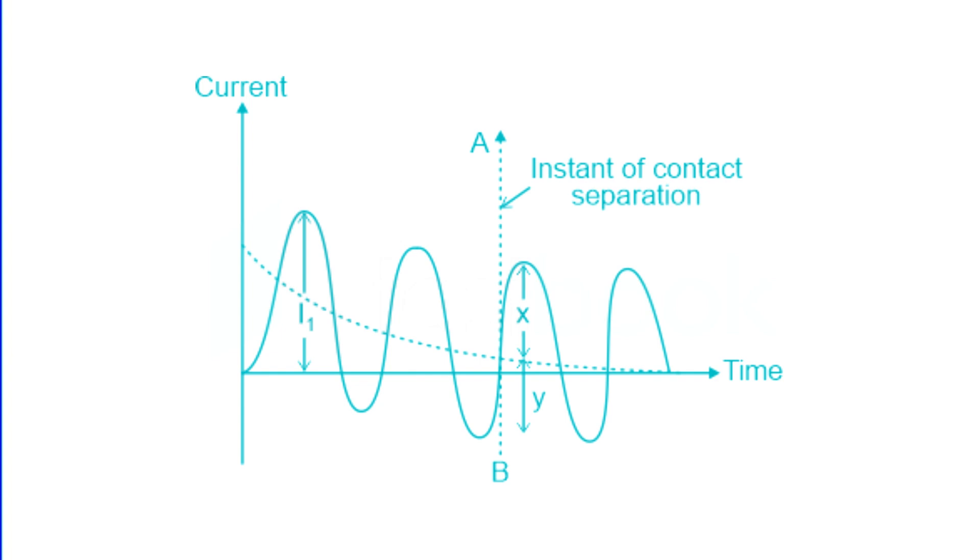From the previous discussion, it is evident that the making current is the peak value of current during the sub-transient state including the DC offset value. In contrast, the breaking current is the RMS value of the current at the moment the breaker contacts separate.